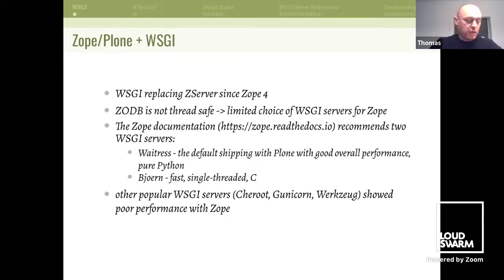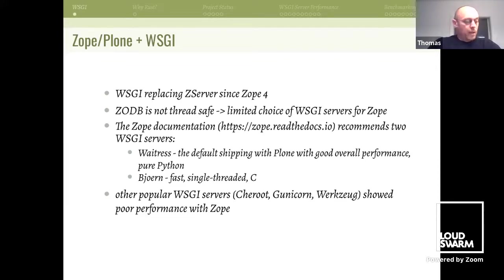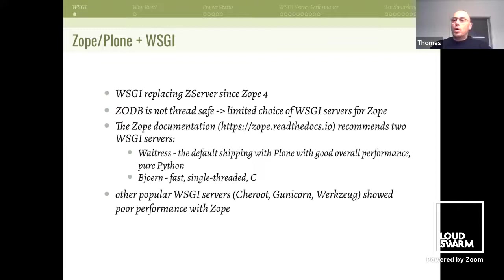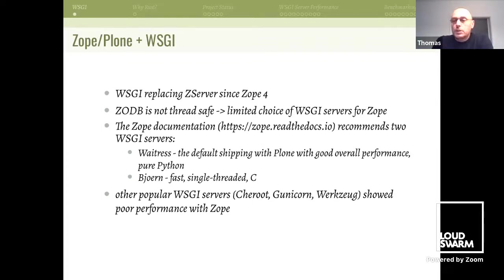During that migration, I contributed a bit to the WSGI setup of Zope and Plone, and I was also exploring WSGI configurations with existing servers. Eventually, out of curiosity, I decided to start writing my own WSGI server, also because I wanted to learn Rust and thought it would make for an interesting project. The goals I set up for myself was to write a multithreaded server with good performance that could be used with Zope and Plone.